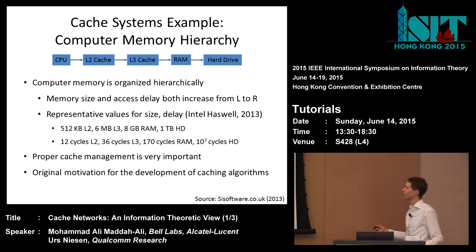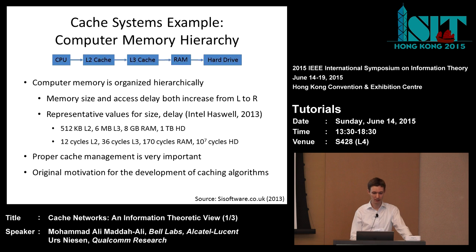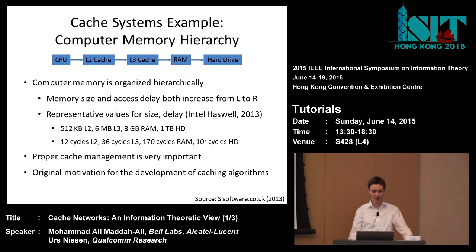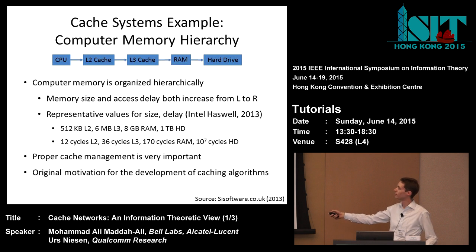Representative values: the level-2 cache might have 512 kilobytes with 12 CPU cycles access time; level-3, 6 megabytes at 36 cycles; RAM, 8 gigabytes at 170 cycles; and hard drive, 1 terabyte at perhaps 10^7 CPU cycles. You can see that proper cache management is critical — if every time you want to add two numbers you must read from the hard drive, you lose 10^7 CPU cycles right there.